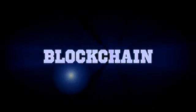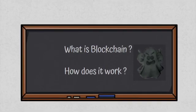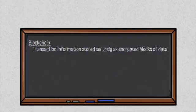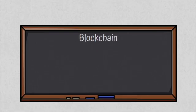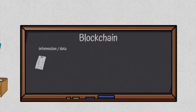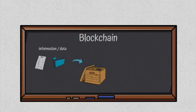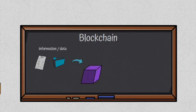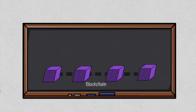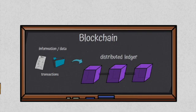Blockchain — we're going to draw this out. The blockchain describes a method or structure of recording transactions and information. The information is recorded in order and stored securely on a shared distributed ledger. For blockchain, this is an encrypted digital block of data. New transactions and new blocks are added to the previous block, creating a chain of blocks — the blockchain — which serves as the distributed ledger.